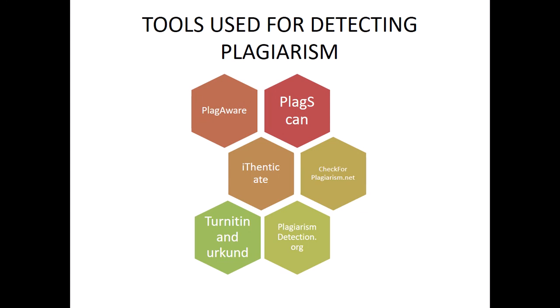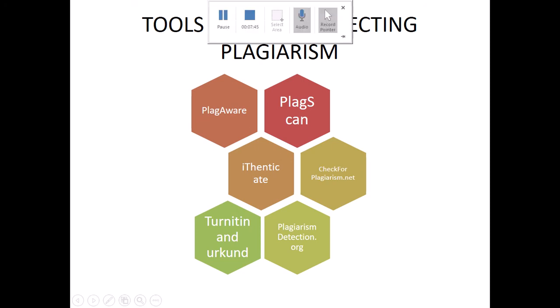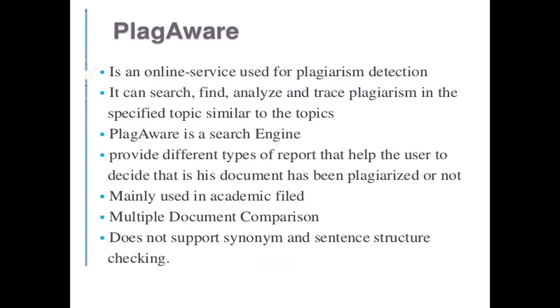Now for online tools — there are many software options including PlagAware, PlagScan, Authenticate, CheckForPlagiarism.net, Turnitin, Urkund, and PlagiarismDetection.org. We will see a demo of some of these. Turnitin and Urkund are the two softwares actually used for research work in our institute, and we will see the reports generated through them.